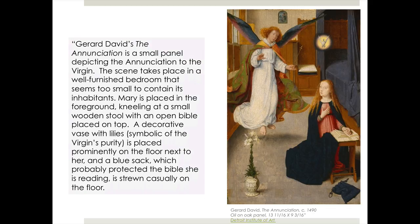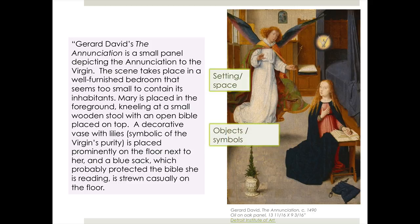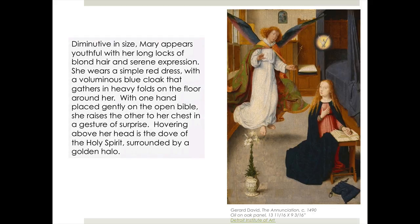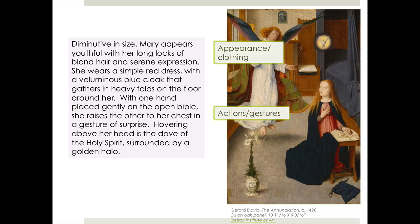So here's a rewrite. Gerard David's The Annunciation is a small panel depicting the Annunciation to the Virgin. The scene takes place in a well-furnished bedroom that seems too small to contain its inhabitants. Mary is placed in the foreground, kneeling at a small wooden stool with an open Bible placed on top. A decorated vase with lilies, symbolic of the Virgin's purity, is placed prominently on the floor next to her, and a blue sack, which probably protected the Bible she's reading, is strewn casually on the floor. Diminutive in size, Mary appears youthful with her long locks of blonde hair and serene expression. She wears a simple red dress with a voluminous blue cloak that gathers in heavy folds on the floor around her. With one hand placed gently on the open Bible, she raises the other to her chest in a gesture of surprise. Hovering above her head is the dove of the Holy Spirit surrounded by a golden halo.